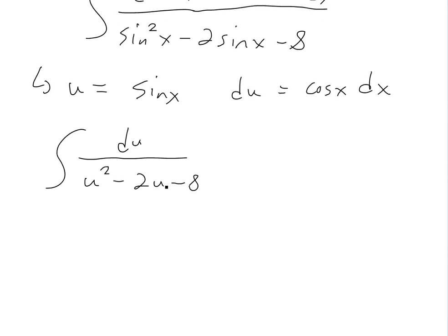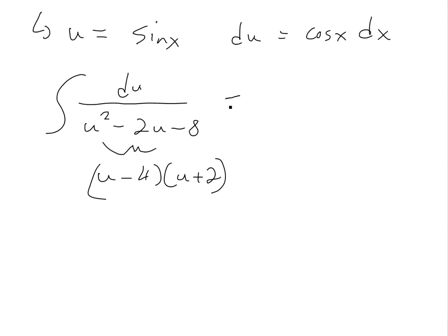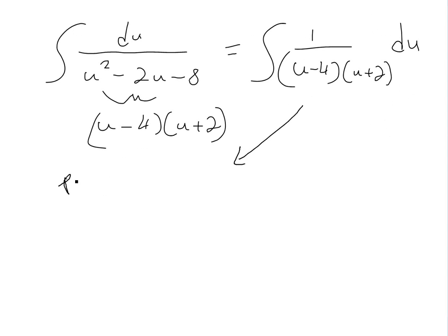Now we could actually factor this out. This part here could equal to, well, the number times the number equals negative 8 and adds up to this. And this one would just be negative 4 and u plus 2. You can see my factoring video, but basically if you foil it out, you're going to get this. So then here, now what we could do, we'll just write that down. This equals integral 1 over u minus 4, u plus 2, du.